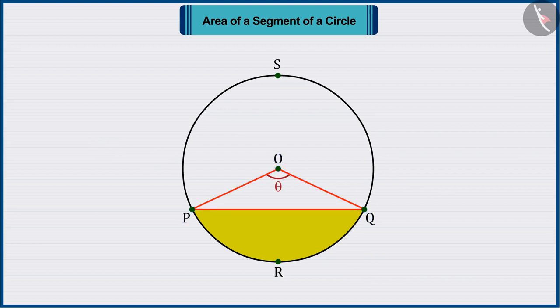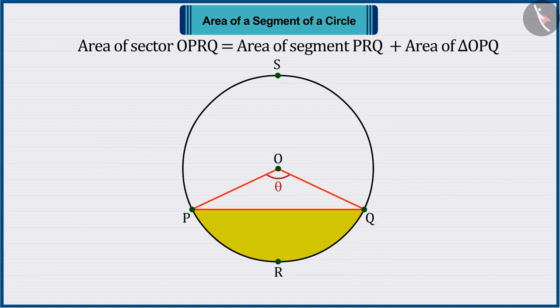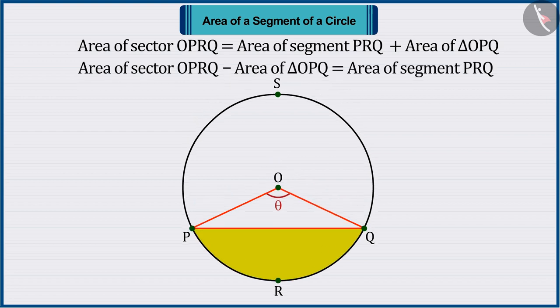Observing the figure carefully, we can say that the area of sector OPRQ is equal to the sum of areas of segment PRQ and triangle OPQ. Since we have to find the area of the shaded region, from the area of the sector OPRQ, area of triangle OPQ is to be subtracted, which is represented by equation 1.